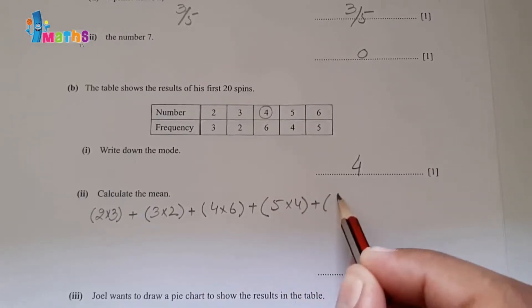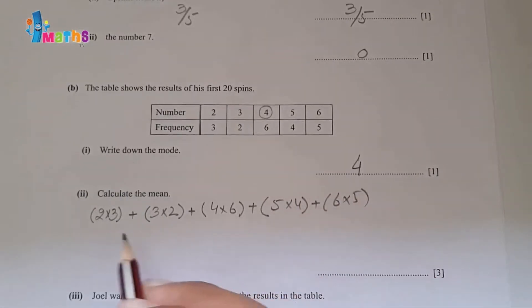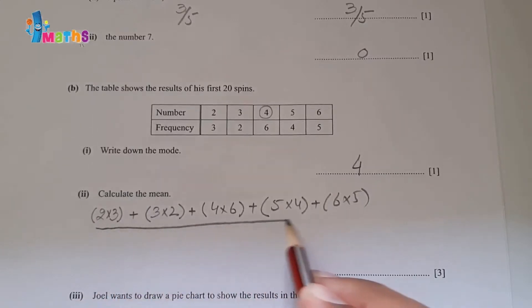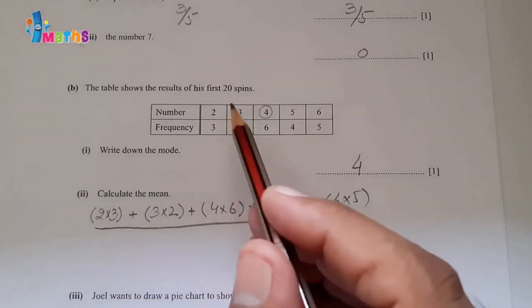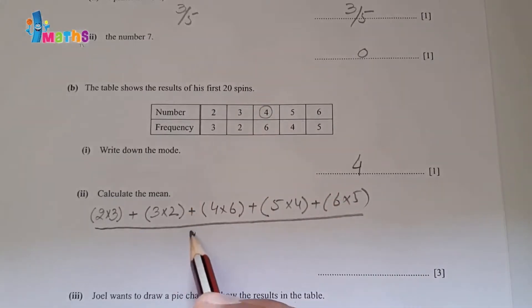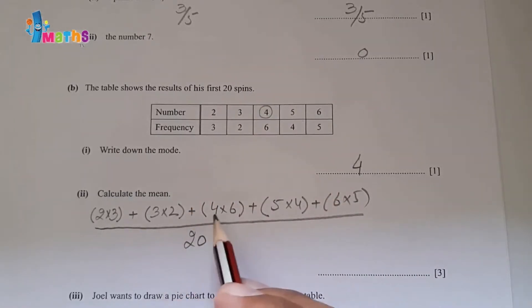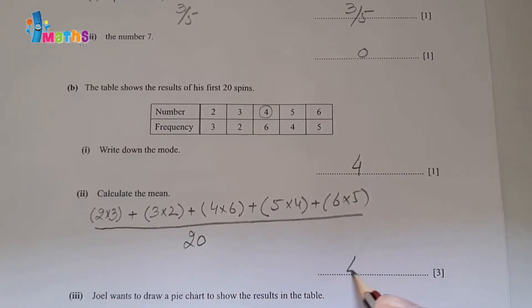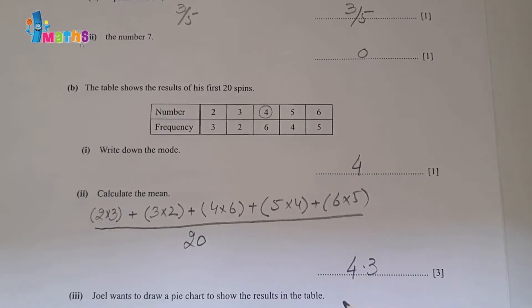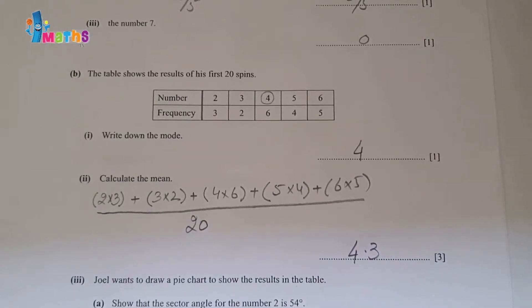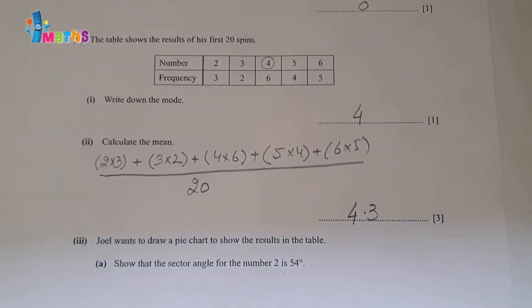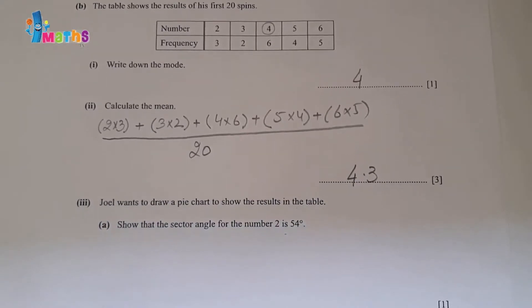Continuing the mean calculation: plus 6×5, then divide by the total number of spins which is 20. Solving with the calculator gives a mean of 4.3 (approximately). Joel wants to draw a pie chart to show the results in the table.